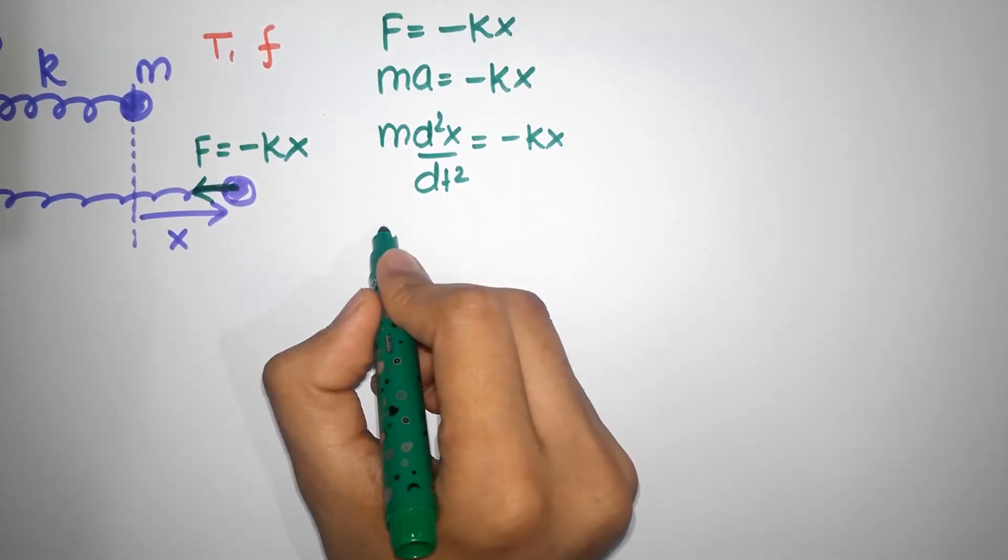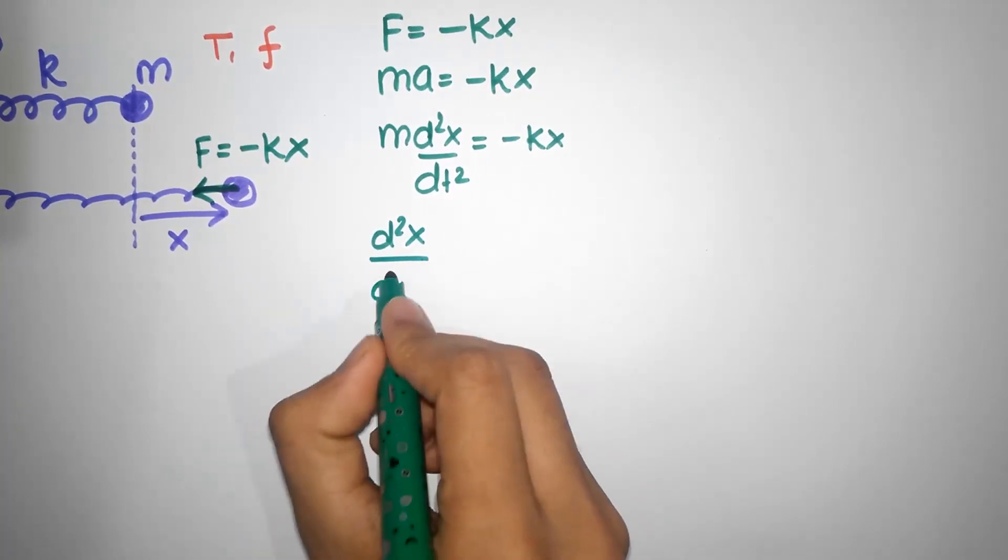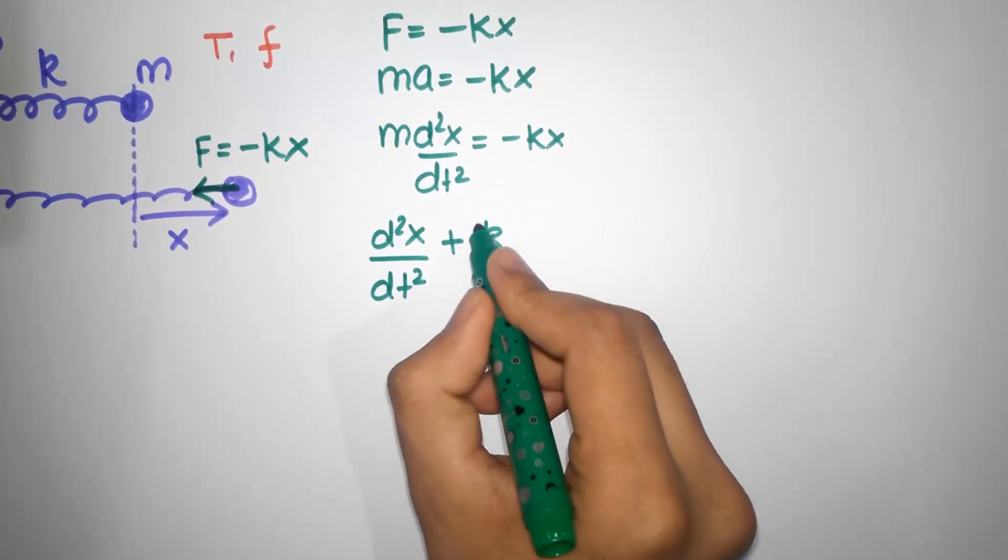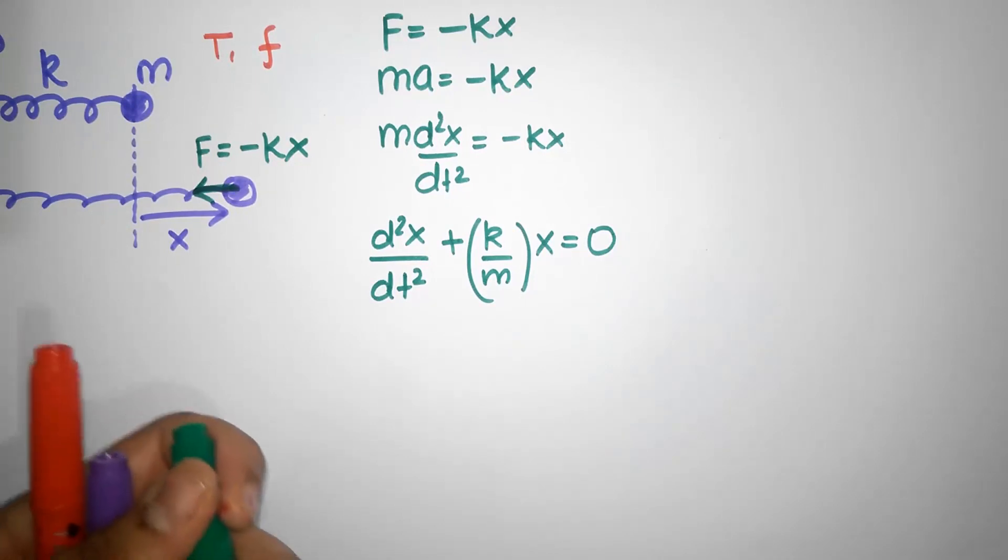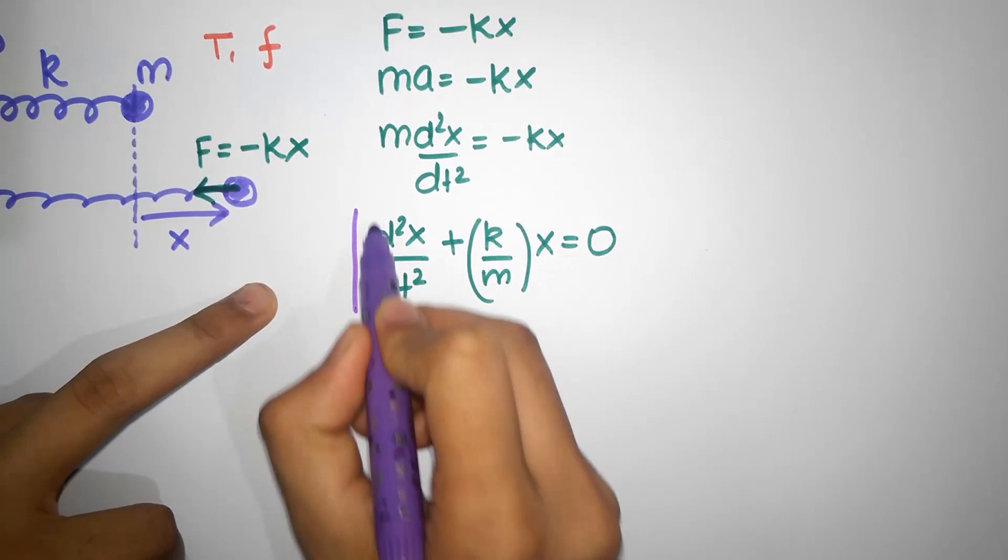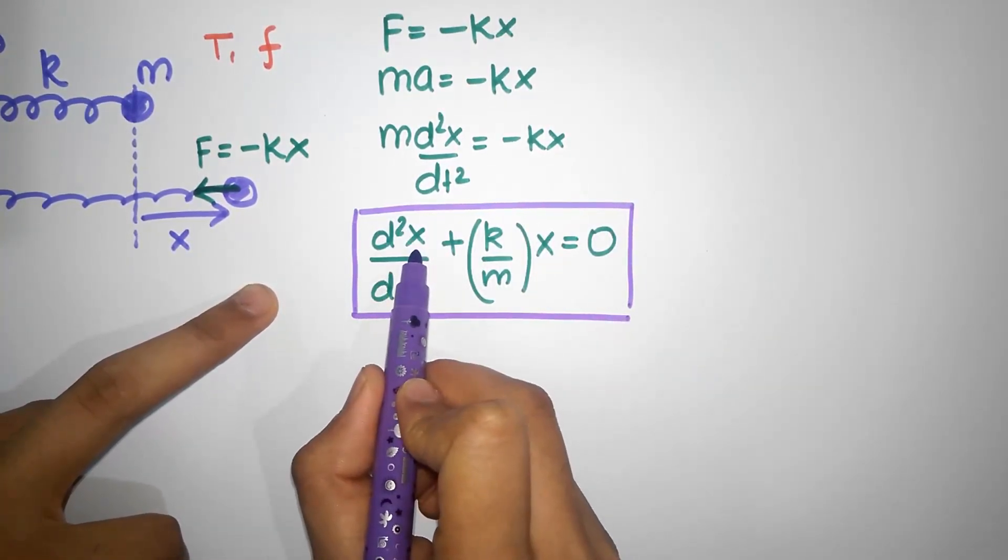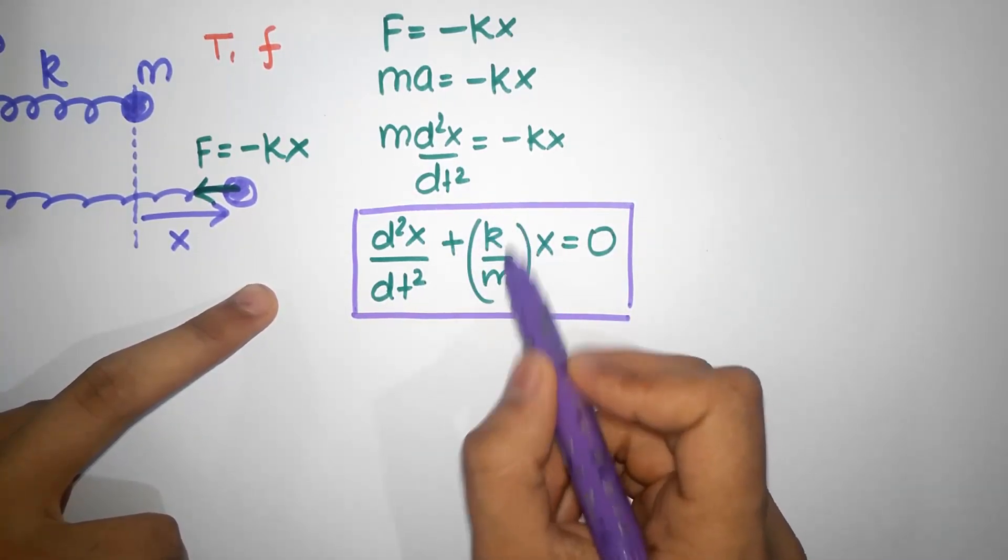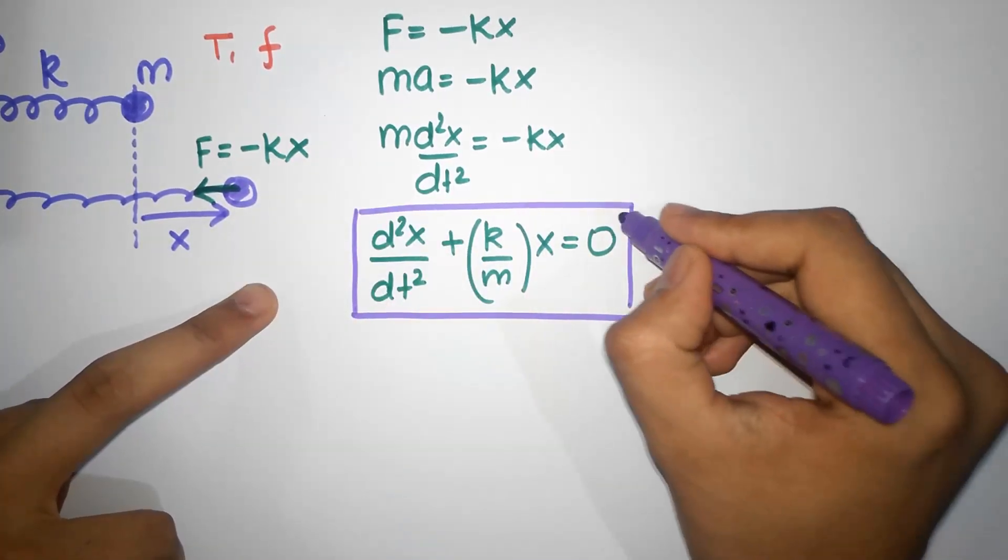I'm going to write this a little differently. I'm going to divide the whole thing by M and put everything on one side. D square X by DT squared plus K divided by M times X equal to zero. I want you to stare at this equation very carefully because we'll be using this equation a lot. Whenever you see an equation which has this particular form, double differentiation of some quantity plus some numerical constant which does not depend on X values or this quantity values, multiplied by X equal to zero, it's always going to be an SHM.